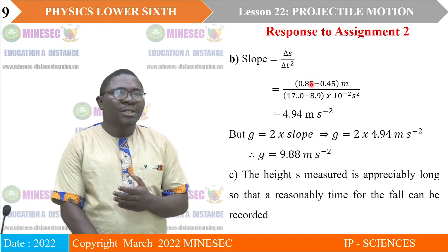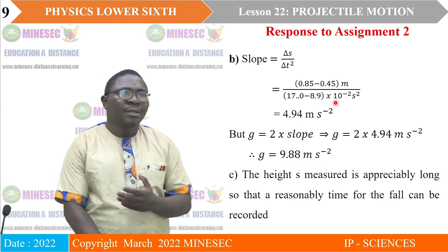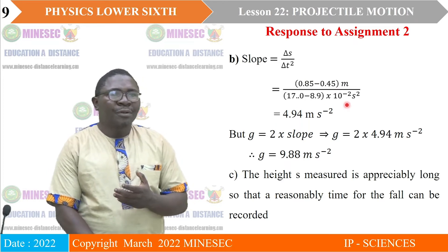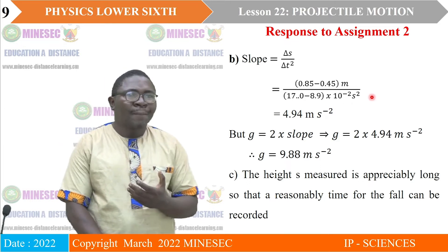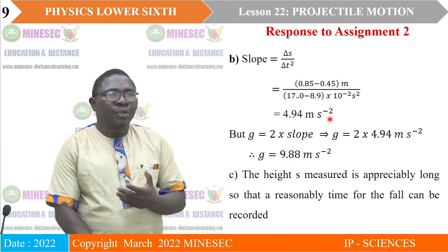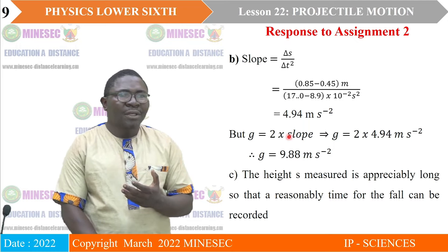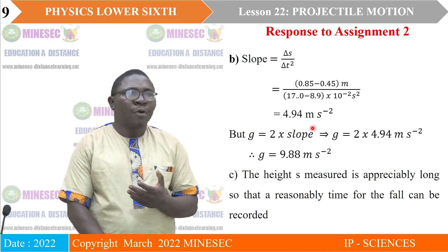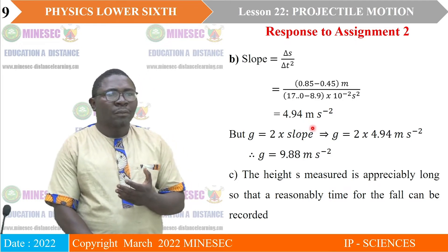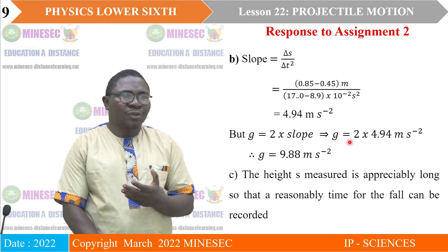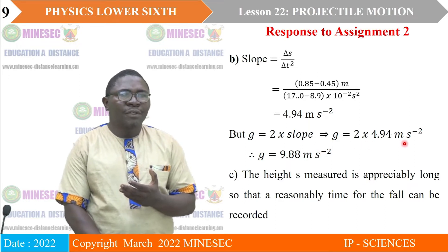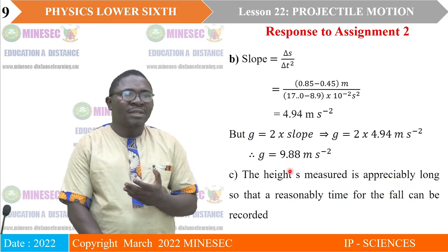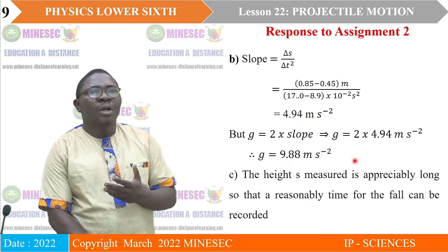The slope equals change in S over change in T squared. Picking arbitrary points or coordinates — not the ones on our table — we should have the slope equal to 4.94 meters per second squared. And from G equals two times the slope, if we substitute the value of the slope, this is what we were expected to have.